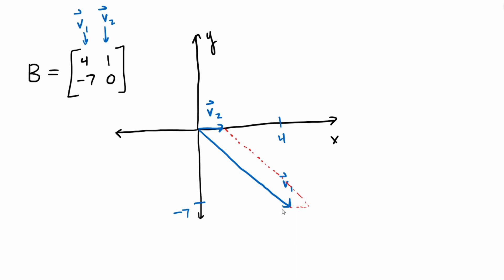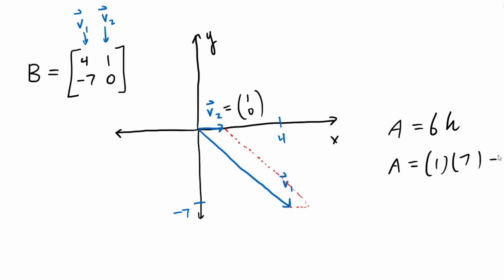We simply use the formula for the area of a parallelogram, which is equal to the base times the height. In this case we can see that the height of this parallelogram is 7 and the base is 1, because v2 is the unit vector (1, 0). So we get 1 times 7, which is just 7. The determinant of matrix B is equal to 7. Going back to Arnold's definition, this is a signed volume, so depending on the orientation of the vectors you may pick up a plus or minus on the determinant.